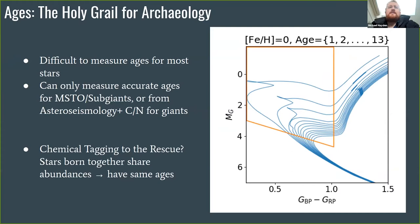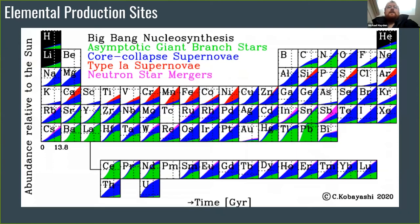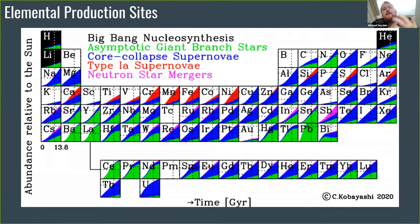On the main sequence and on the giant branch, the isochrones are very close together, so it's very hard to estimate an age from your stellar parameters alone except for these turnoff stars, unless you have asteroseismology, which is only available for a small subset. This is where chemical clocks or chemical tagging might come to our rescue — stars born at the same time and place should have similar abundances.